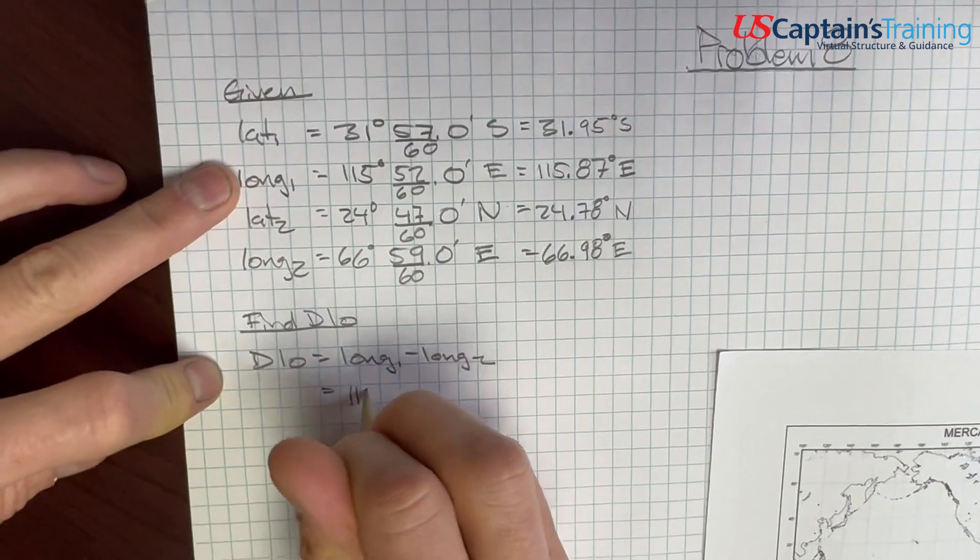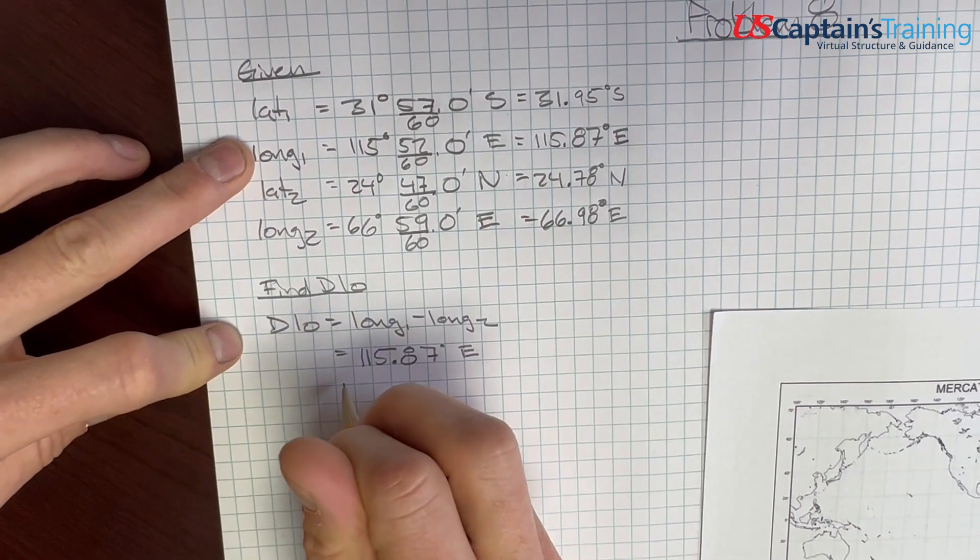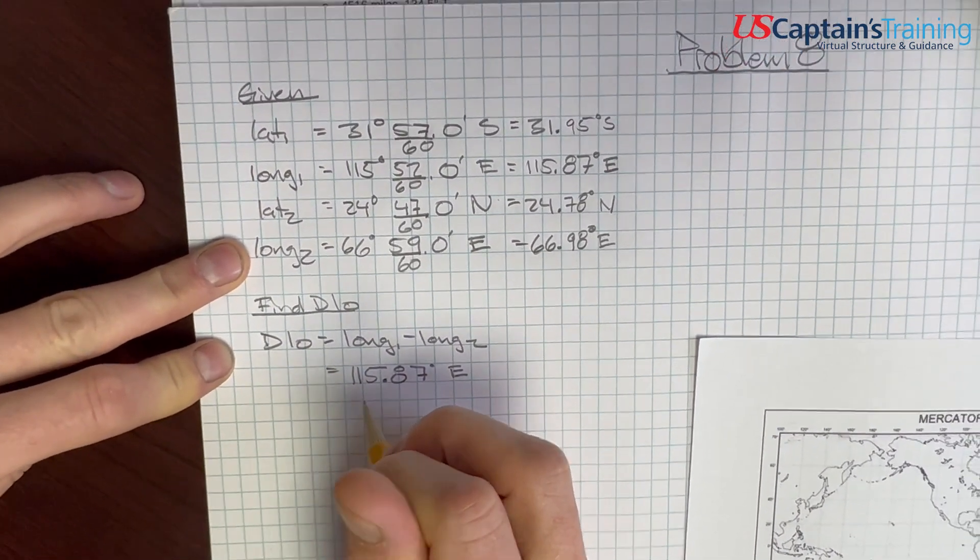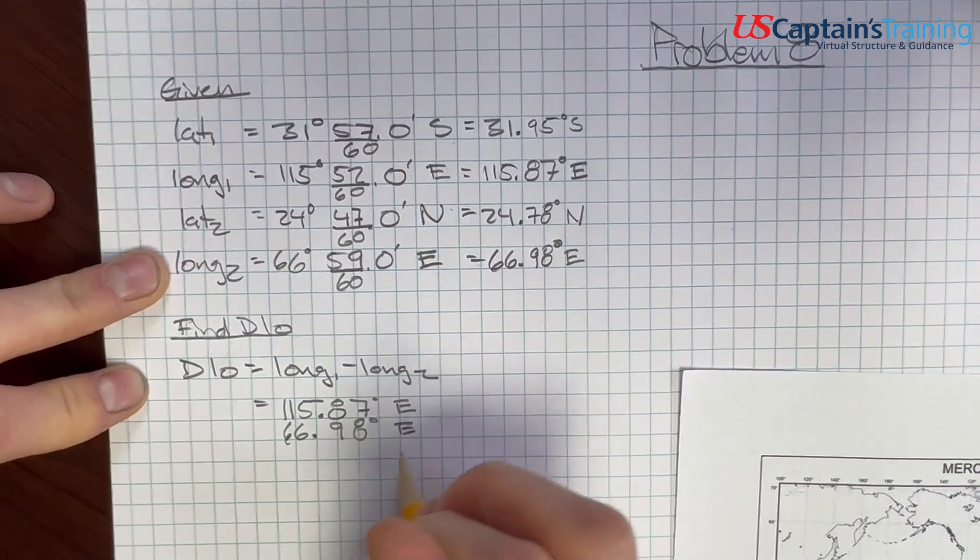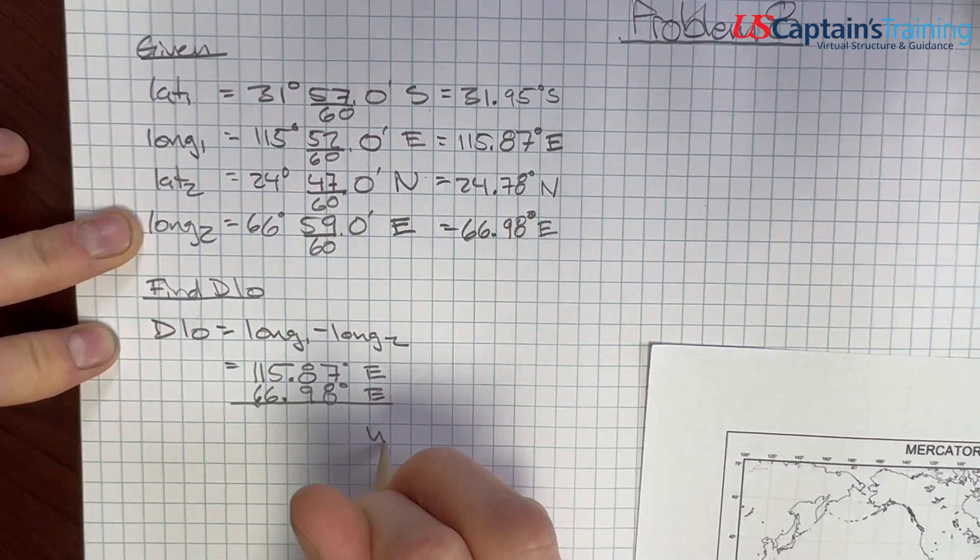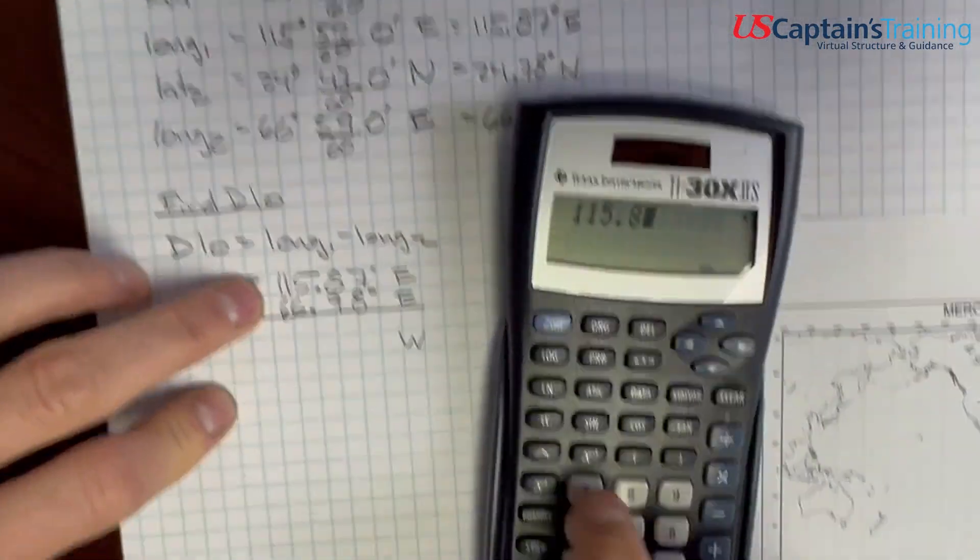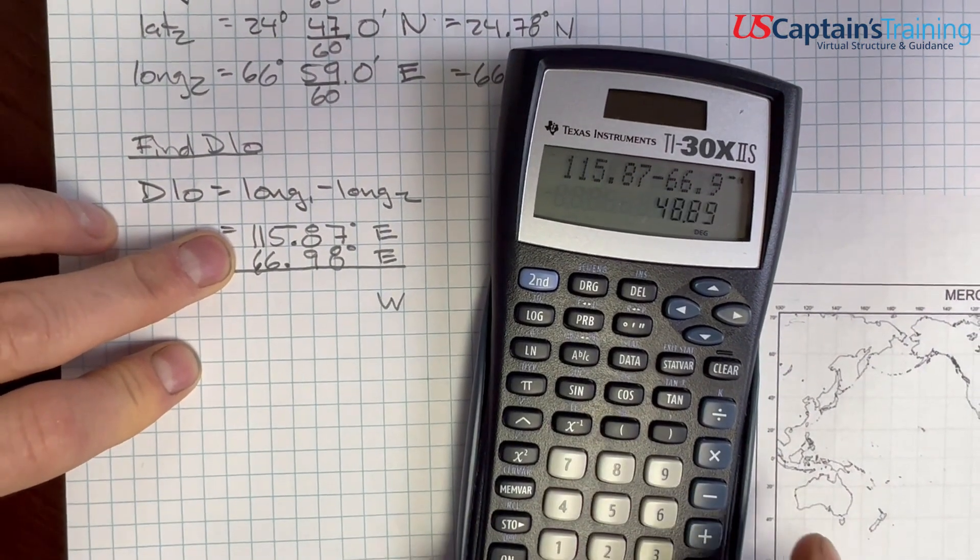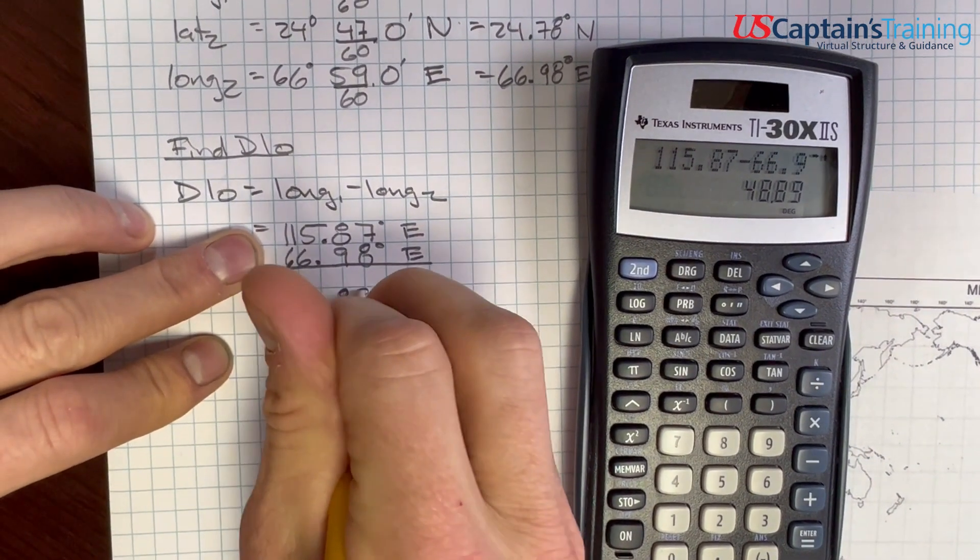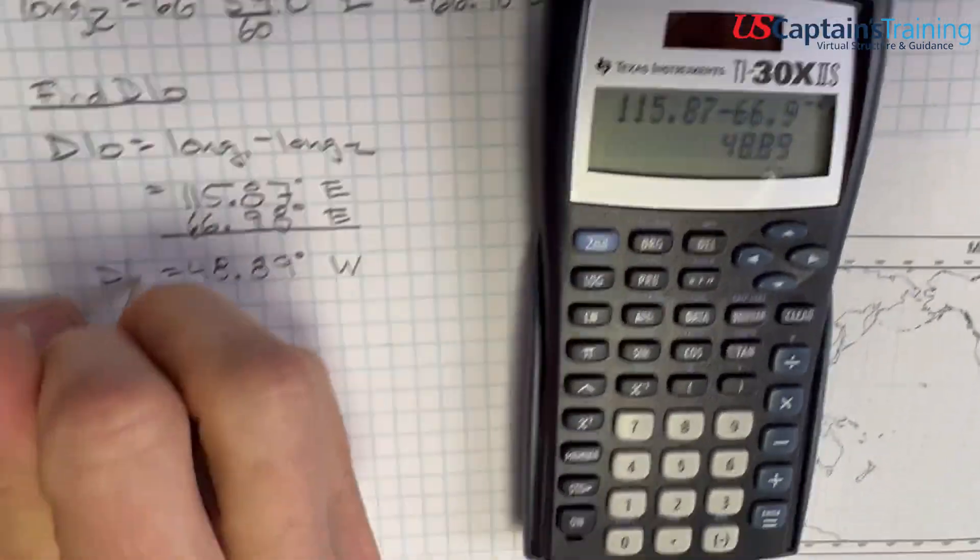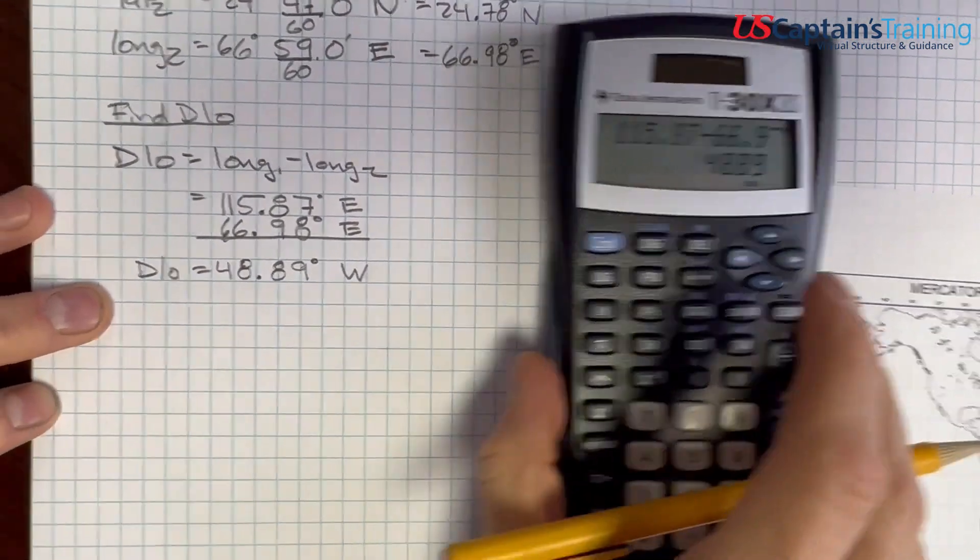So, 115.87 degrees east minus 66.98 degrees east. And it turns out we traveled to the west. When we name this thing, it's west. We'll do this simple subtraction here. 115.87 minus 66.98 equals 48.89. 48.89 degrees west is our D-low.